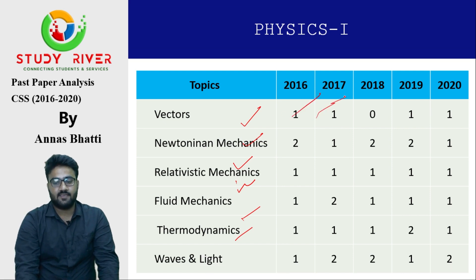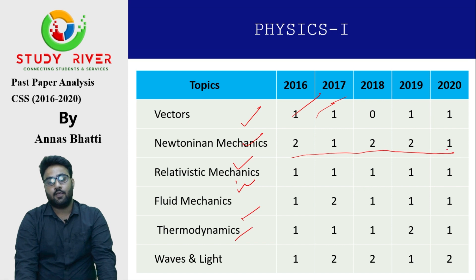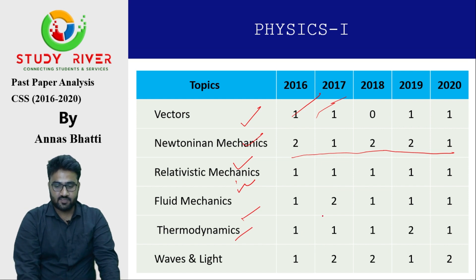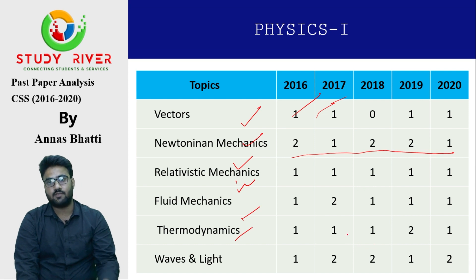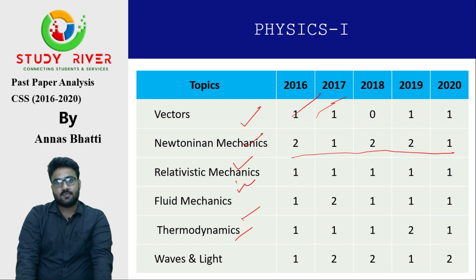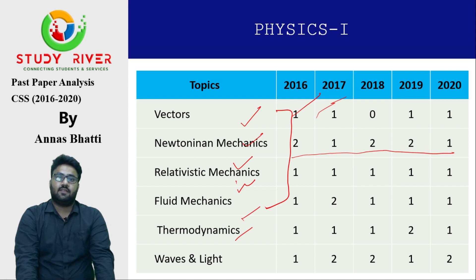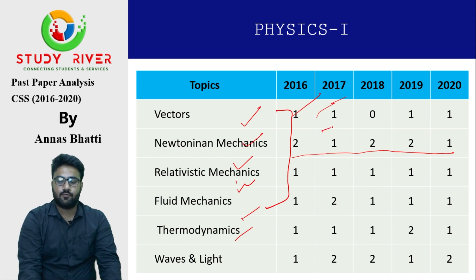There is a yearly comparison that we are going to look at for questions. As it is clear from the slide, Newtonian mechanics is the most favorite area of the examiner because there are two questions every year. If you see waves and lights, there are many questions from that area as well — two questions — so that you can easily get around 70 plus marks.